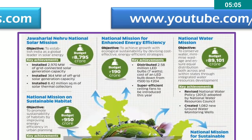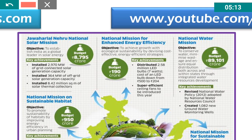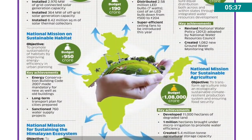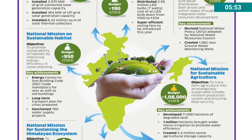Here is a quick summary of all eight missions. The National Solar Mission aims to establish India as a global leader in solar energy. The National Mission on Enhanced Energy Efficiency focuses on achieving greater energy efficiency. The National Water Mission aims to conserve water, minimize wastage, and ensure equal distribution across and within states through integrated water resource development. The National Mission on Sustainable Habitat promotes sustainability of habitats by improving energy efficiency in urban planning.